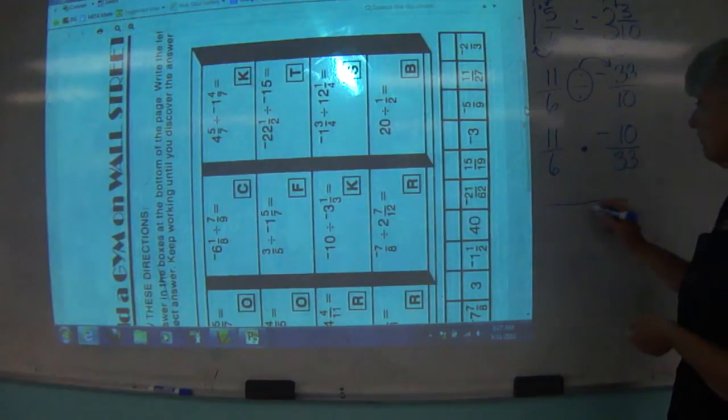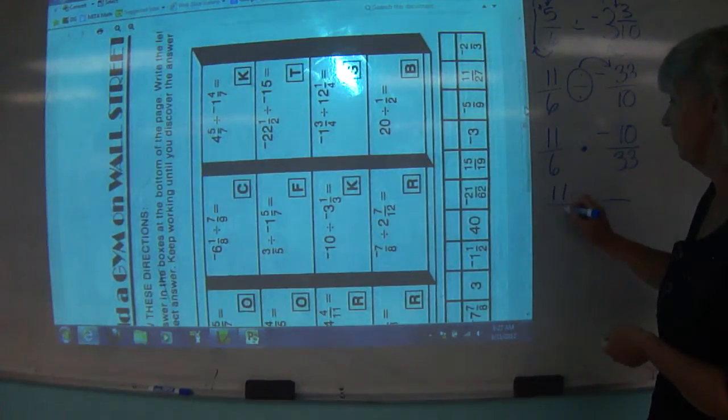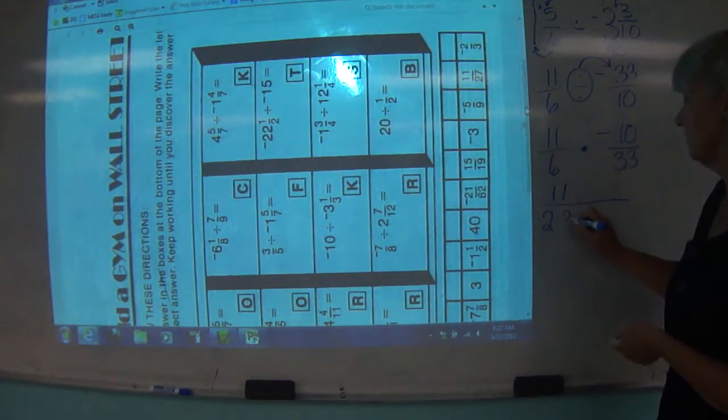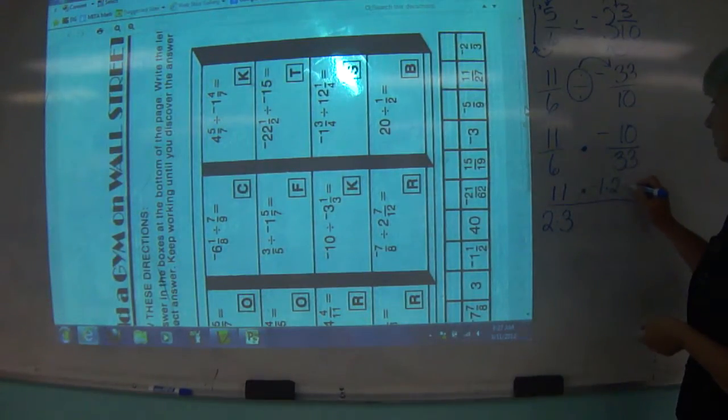Now, if we turn this into one fraction, 11 is prime, 6 is 2 times 3, times negative 1, 10 is 2 times 5, 33 is 3 times 11.